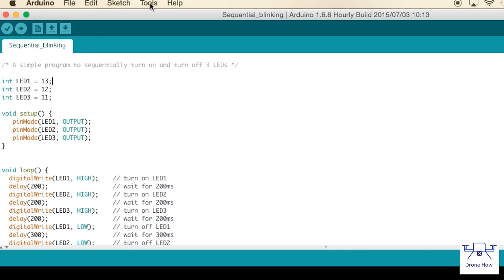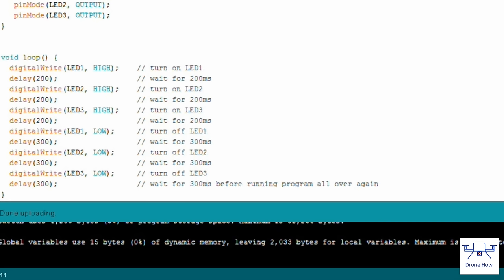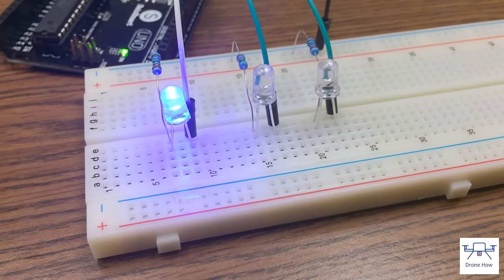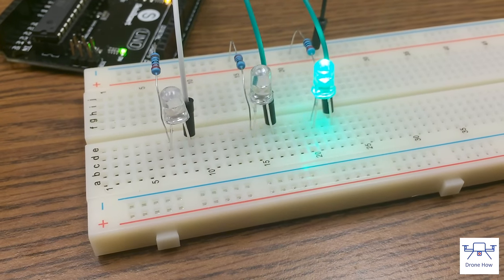Click on the upload button on the top left hand corner of the screen to upload the program to the Uno. A green progress bar on the lower right hand corner will indicate upload progress and unless any errors appear in the black message bar at the bottom of the screen, your board should now be running the program and the LEDs should be turning on and off like you can see here.